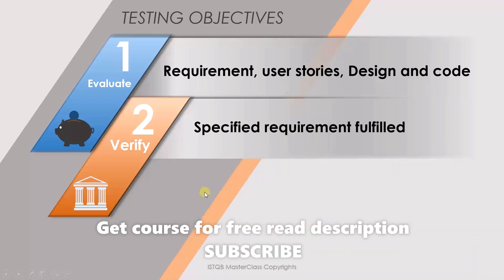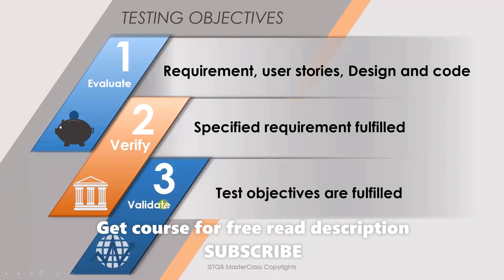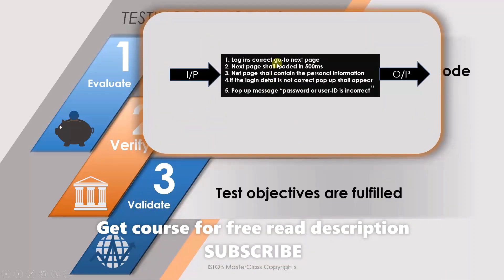The third objective is to validate that the test objectives are fulfilled. We've already seen the five required objectives from the customer. Now we run the code and see if we are fulfilling them. At this stage we don't have access to the code — it's a black box, invisible to us. We only have access to input and output. On the input side, we give the correct user ID and password, then observe whether the next page loads in 500 milliseconds and whether it contains the expected personal information.